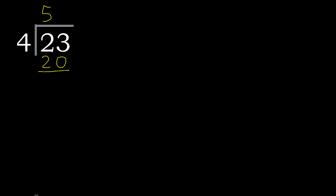23 minus 20 is 3. Here there is no next number, therefore complete — always complete with 0. And here add the decimal point: 0 point.